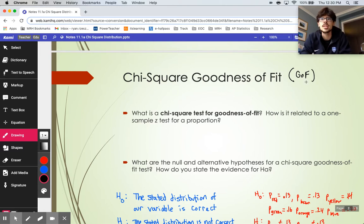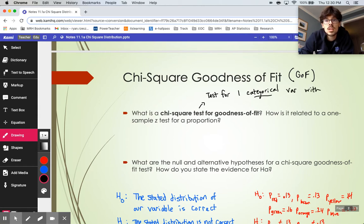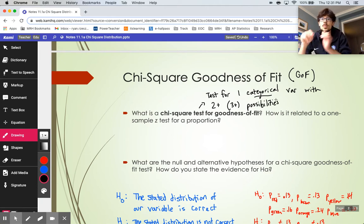So the chi-square goodness of fit test is a test that we use on a single categorical variable. What is the chi-square goodness of fit test? It is going to be a test for one categorical variable with technically two or more choices or possibilities. But really, we want three or more possibilities.